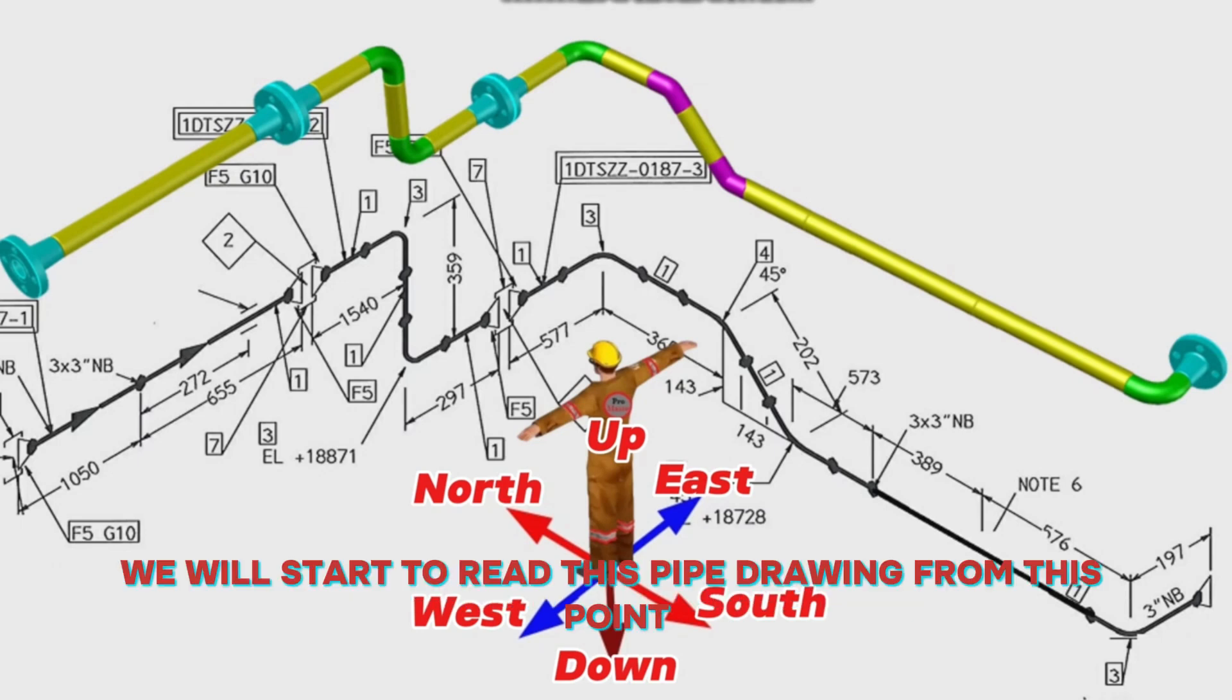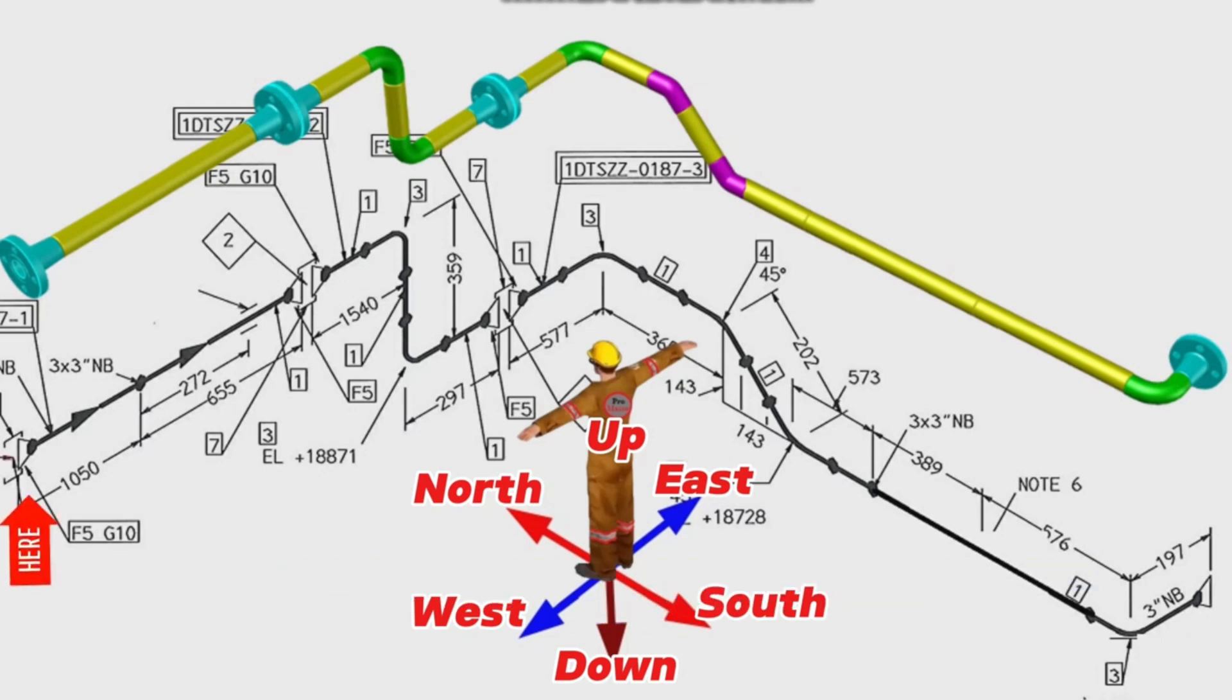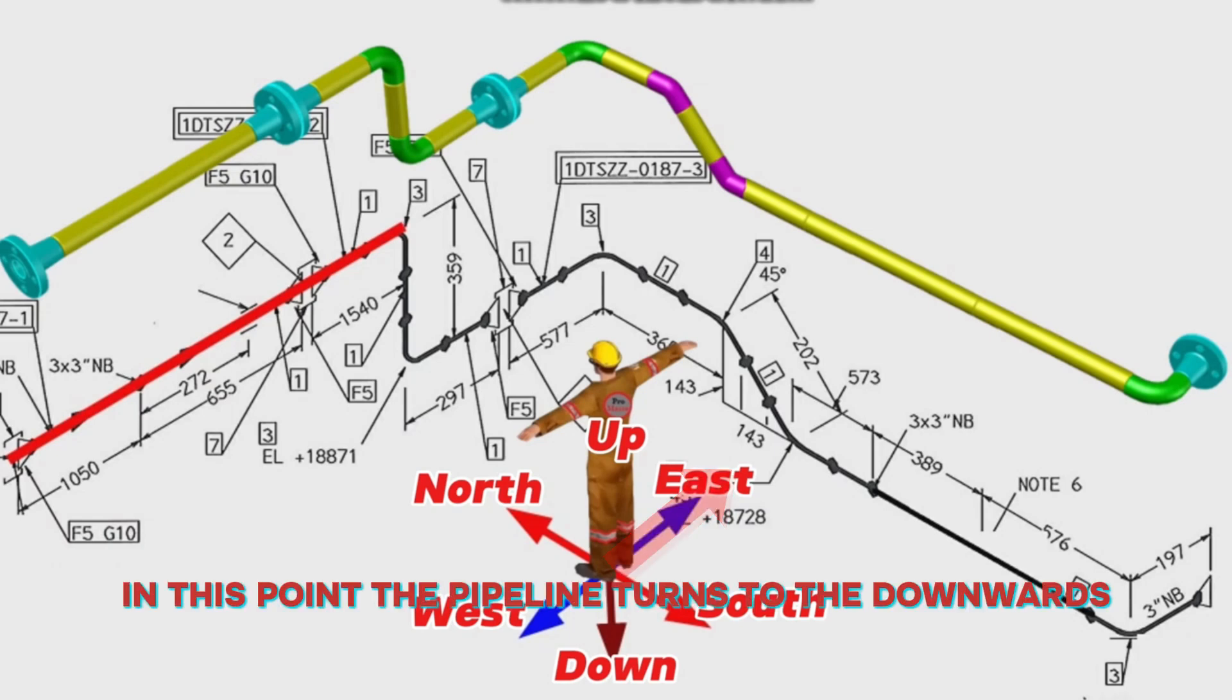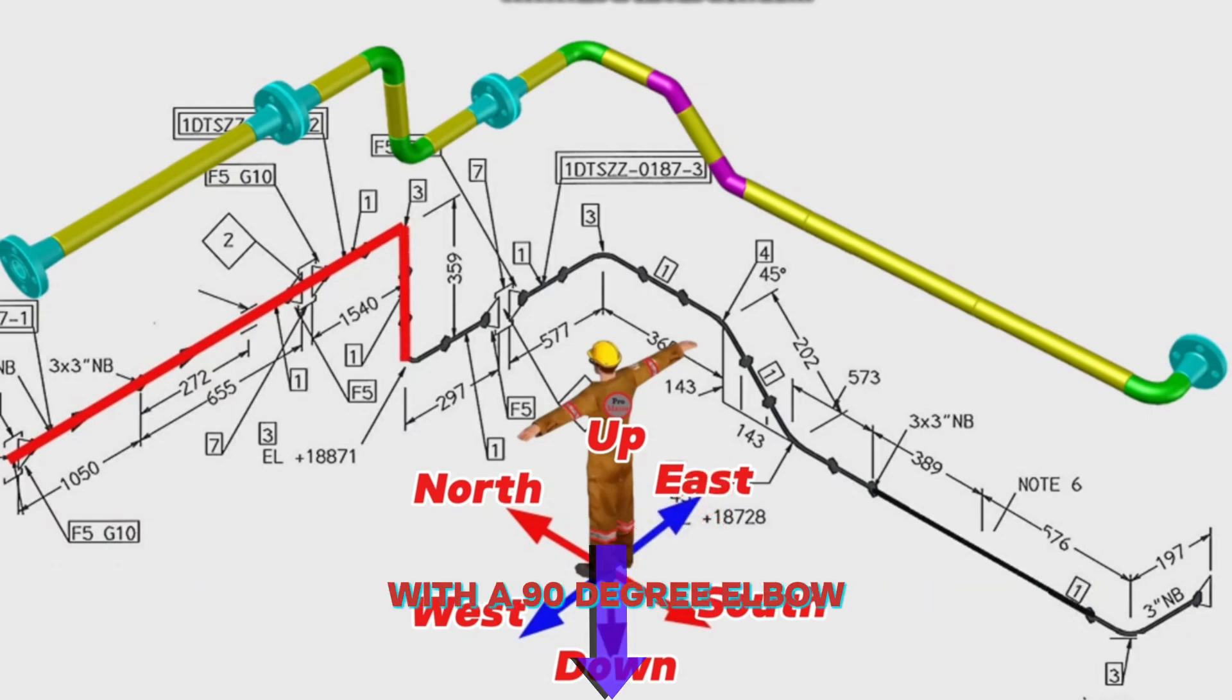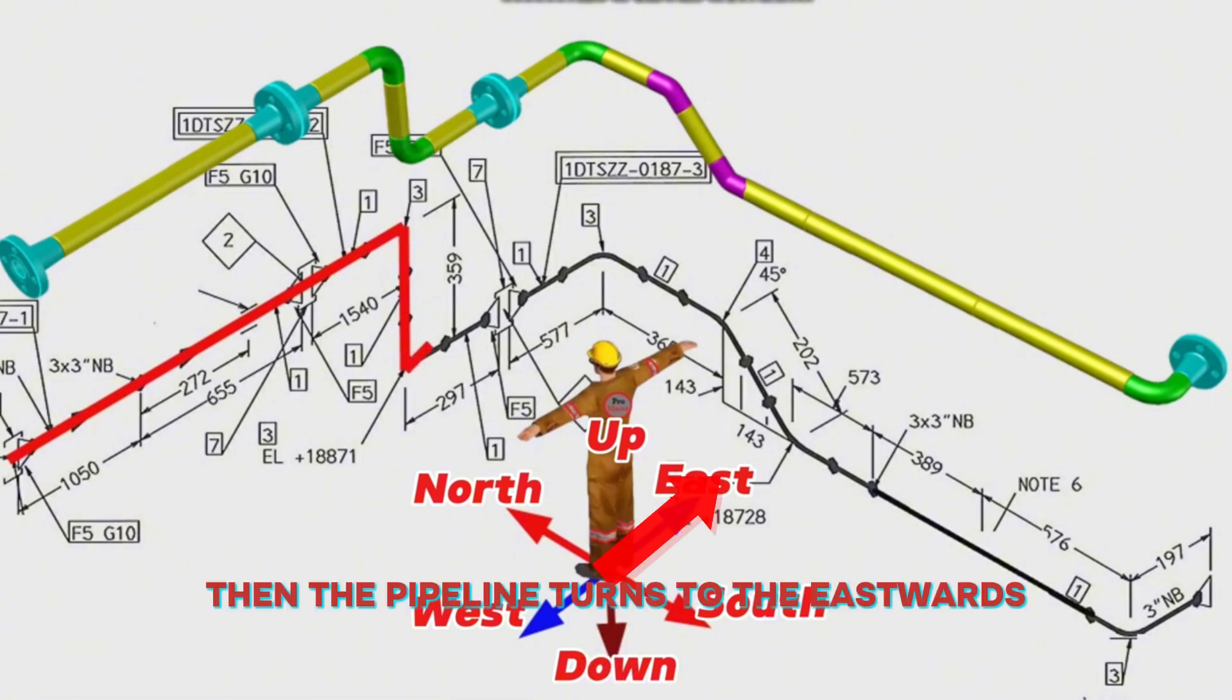We will start to read this pipe drawing from this point. The pipeline starts from this flange and extends to the eastwards. At this point, the pipeline turns downwards with a 90-degree elbow. Then the pipeline turns to the eastwards again with a 90-degree elbow.